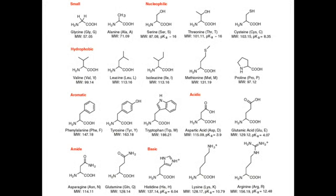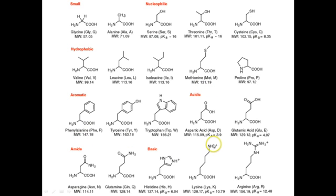Here's that list of amino acids. You don't have to copy these down or know these, but I did want you to at least see them and get familiar with them. They have names like glycine, alanine, serine, threonine, cysteine, valine, leucine, isoleucine, methionine, proline, phenylalanine, tyrosine, tryptophan, aspartic acid, glutamic acid, asparagine, glutamine, histidine, lysine, and arginine. So that's the 20 amino acids.